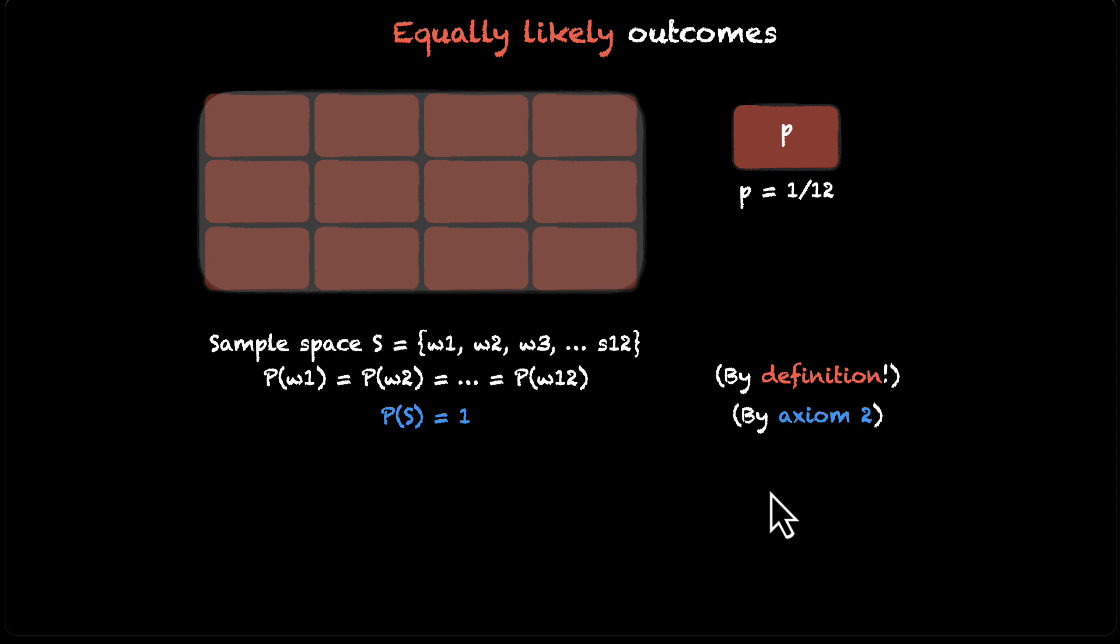And that's the right answer. But we are also going to prove this using the axioms that we discussed in the previous video. Let's do this step by step. The sample space is S and we have these 12 equally likely outcomes. We know that the probability of each of them is the same. They are all equally likely. And that's by definition because that's exactly how we have defined these orange events. We also know that the probability of the sample space, this entire sample space is 1. We know this by our axiom 2.